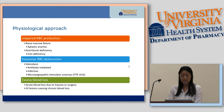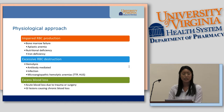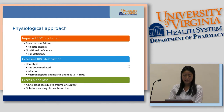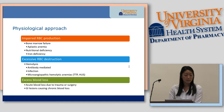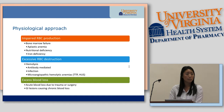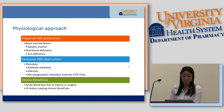Looking at the physiological approach: impaired red blood cell production occurs in situations like aplastic anemia, where there's bone marrow failure, or nutritional deficiency such as iron deficiency anemia. For excessive red blood cell destruction, that can happen in hemolysis or infection — this occurs in microangiopathic hemolytic anemia such as TTP and HUS. For excessive blood loss, that can be due to trauma or surgery, as well as chronic blood loss, usually due to GI lesions.